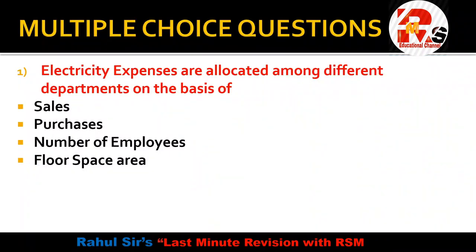Let us start with the first question. Electricity expenses are allocated among different departments on the basis of: sales, purchases, number of employees, or floor space area. Electricity expenses are not allocated on sales or purchases basis, and number of employees has no relation to electricity expenses. So the correct answer is floor space area — electricity expenses are allocated on the basis of floor space area.